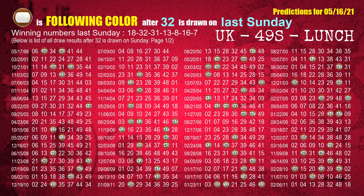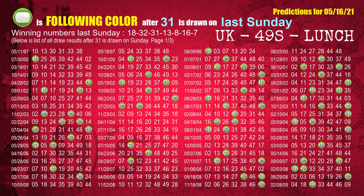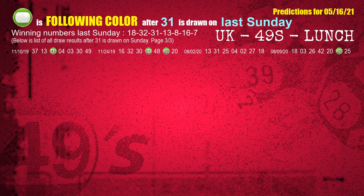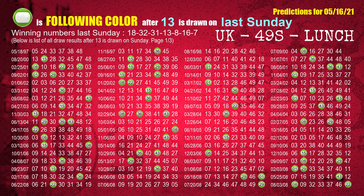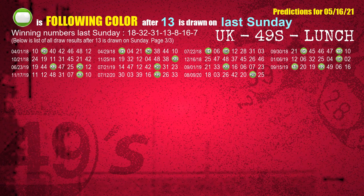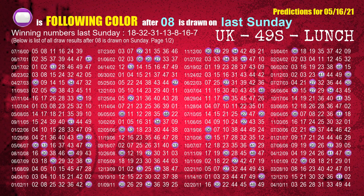The second winning number last Sunday is 32. The most frequently following color is brown when 32 is the winning number on last Sunday. The third winning number last Sunday is 31. The most frequently following color is green when 31 is the winning number on last Sunday. The fourth winning number last Sunday is 13. The most frequently following color is green when 13 is the winning number on last Sunday. The fifth winning number last Sunday is 08. The most frequently following color is purple when 08 is the winning number on last Sunday.